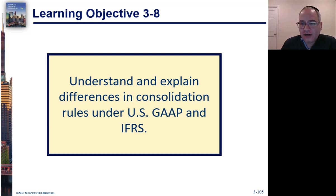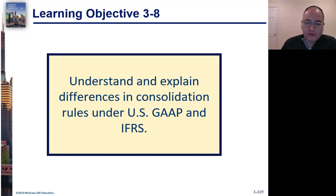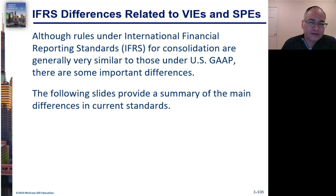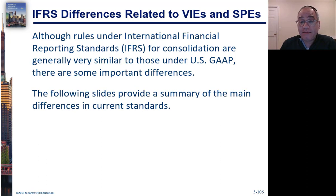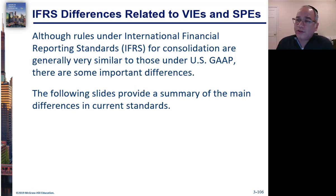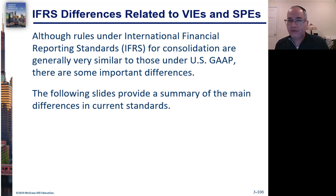Last but not least, let's talk a little bit about IFRS. Learning Objective 3-8: Understand and Explain Differences in Consolidation Rules under US GAAP and IFRS. Although rules under IFRS for consolidation are very similar to US GAAP, there are some key differences you should be aware of. Over time the FASB has managed to converge its consolidation rules with IFRS and they are fundamentally similar.